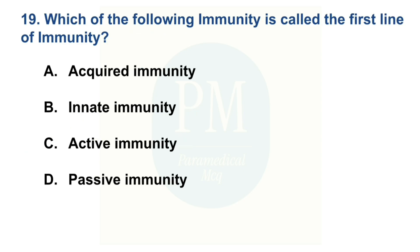Which of the following immunity is called the first line of immunity? Option A: Acquired immunity. Option B: Innate immunity. Option C: Active immunity. Option D: Passive immunity. The correct option is Option B — Innate immunity.